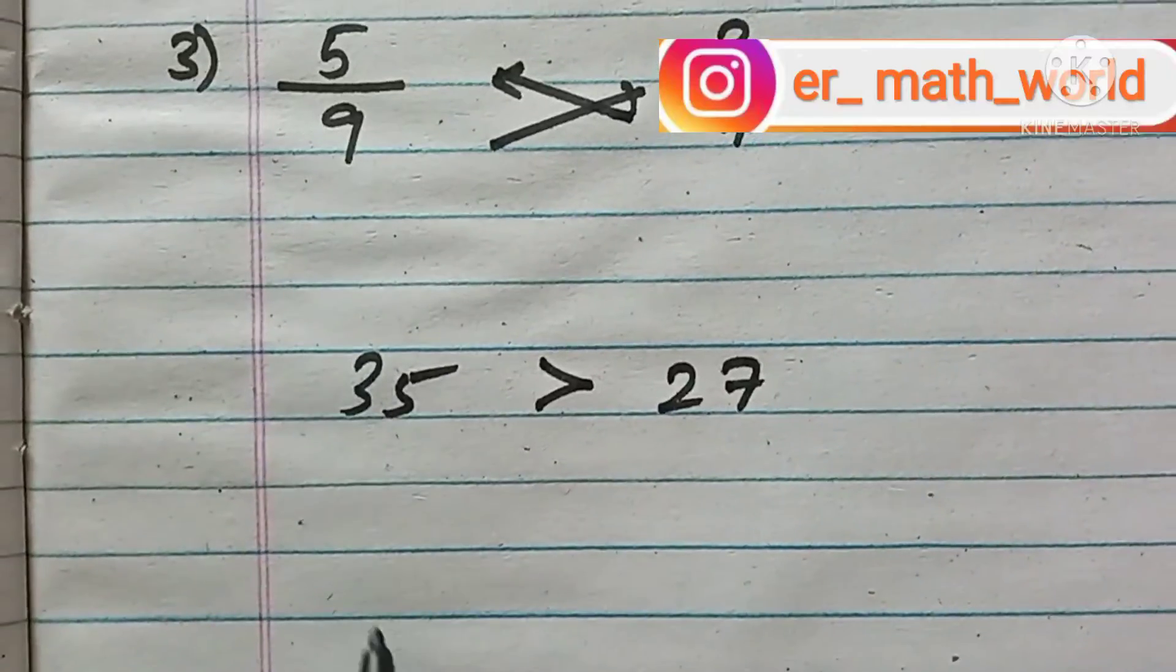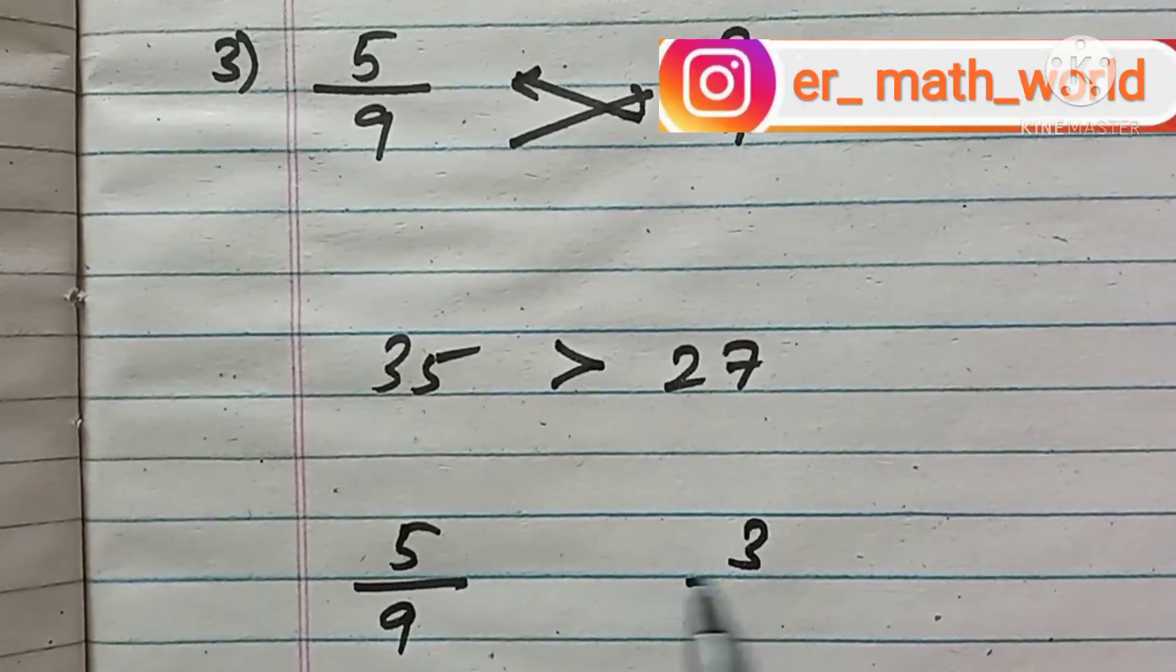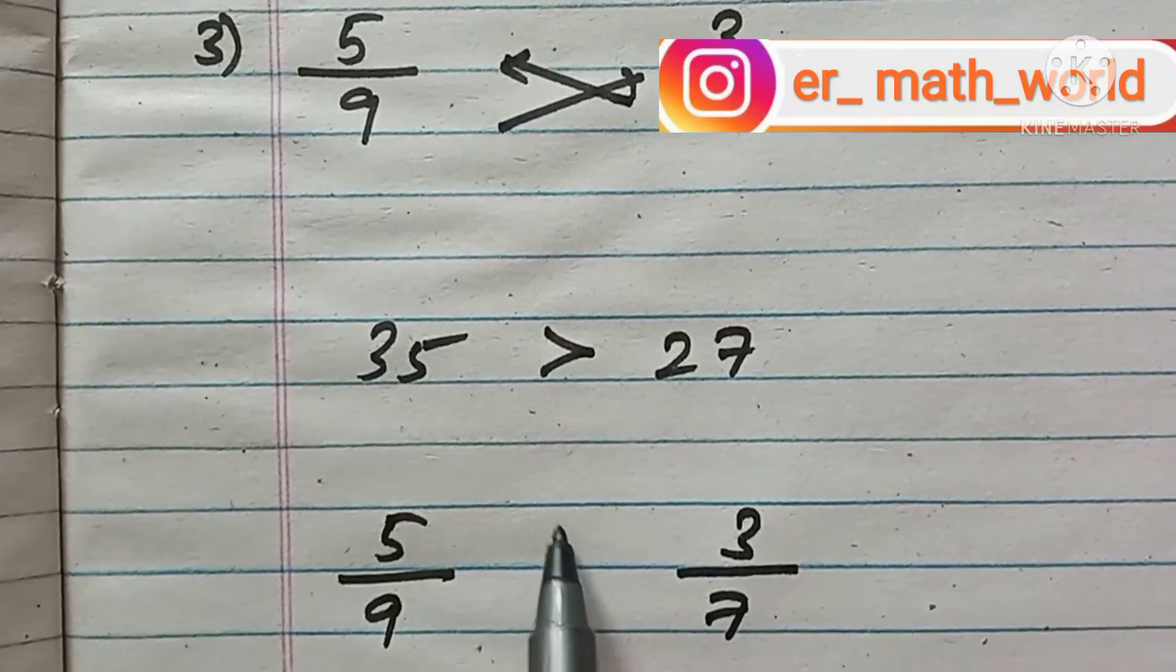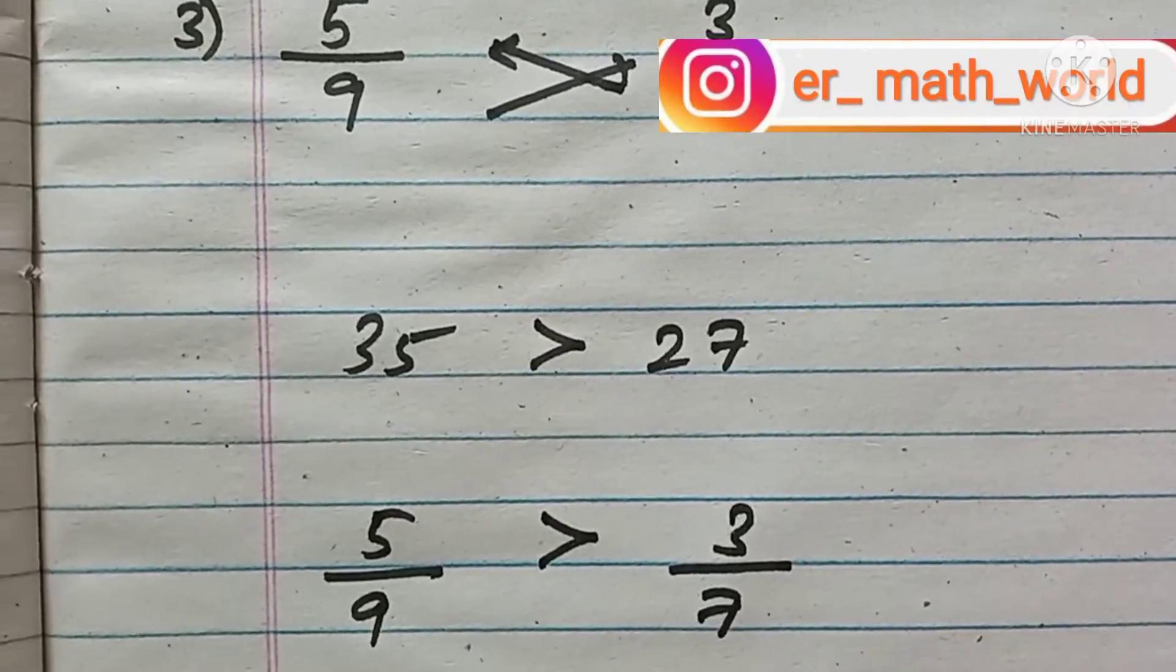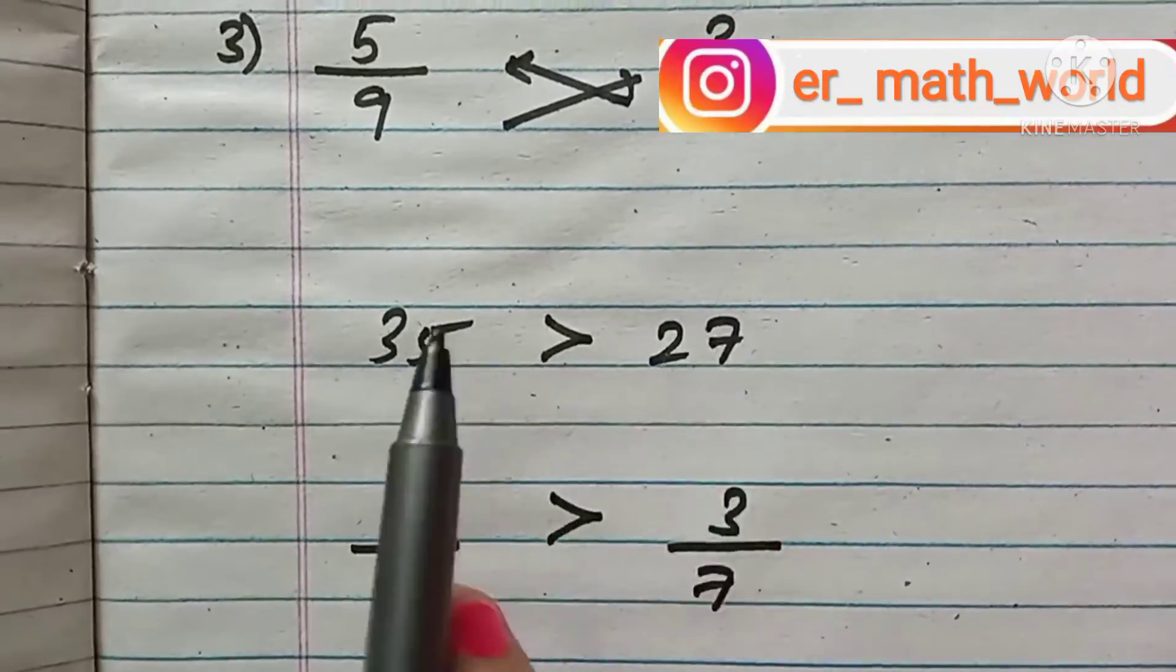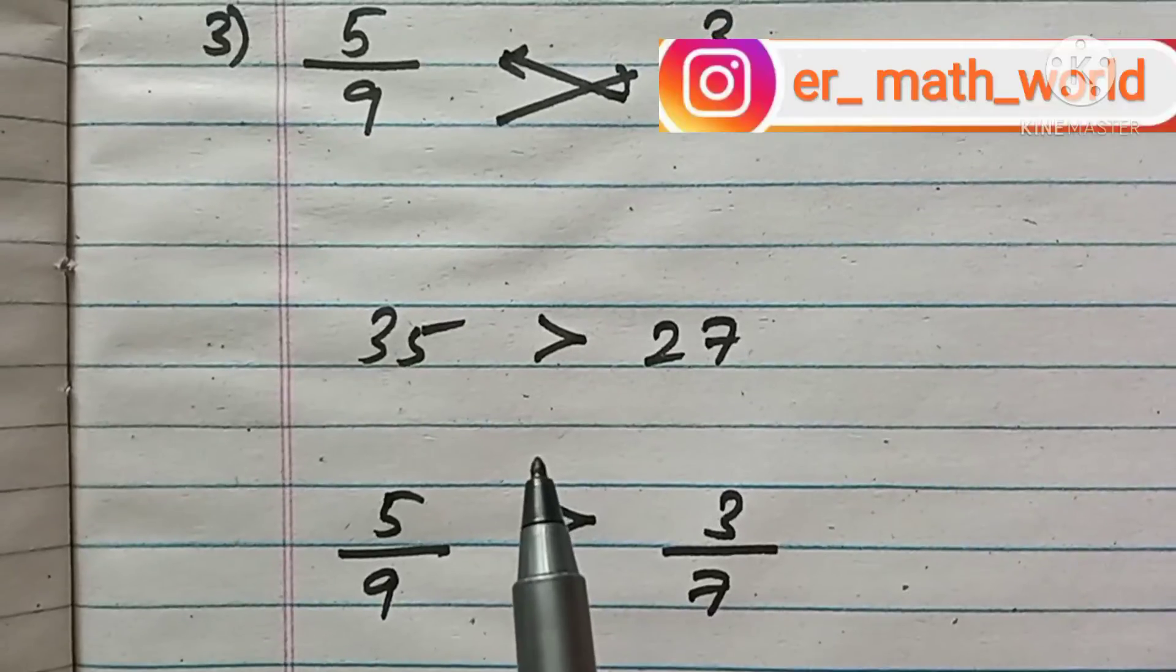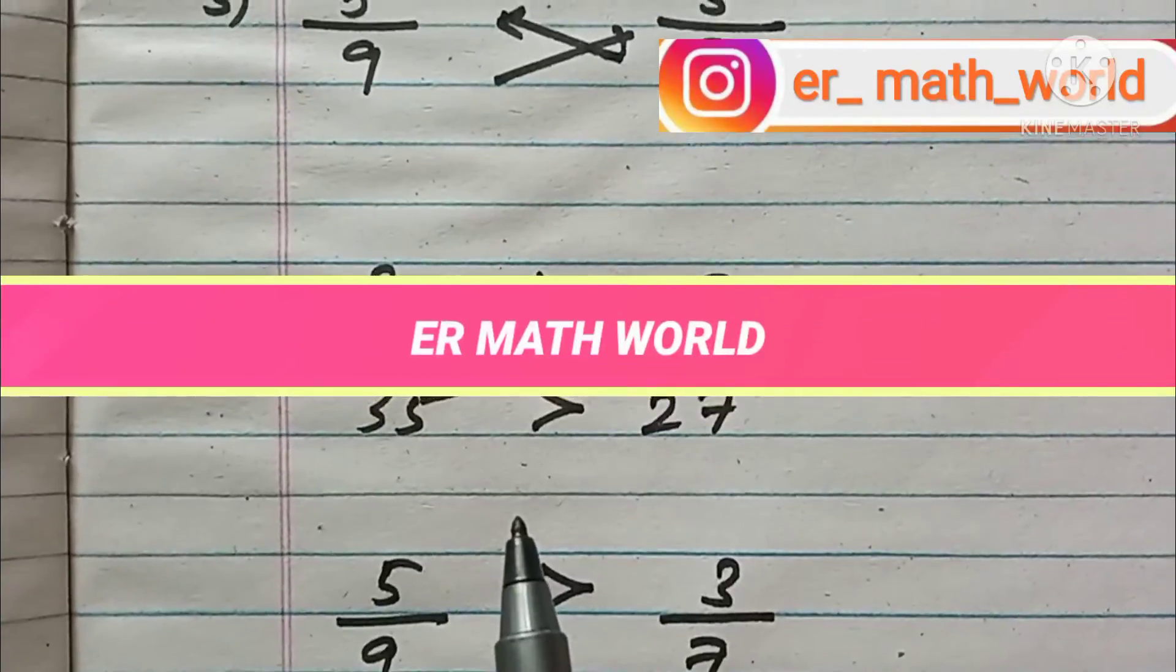The first question is 3/5 and 6/9. Now we are not at all going to take any LCM, nothing. Just listen to the steps of how I am going to compare. So, 3/5 and 6/9, do the cross multiplication.